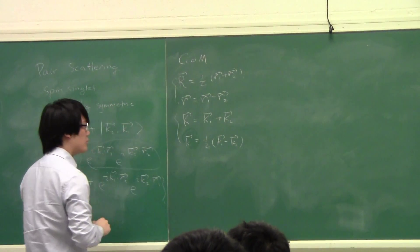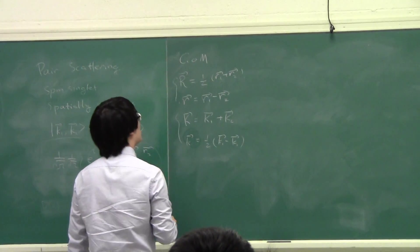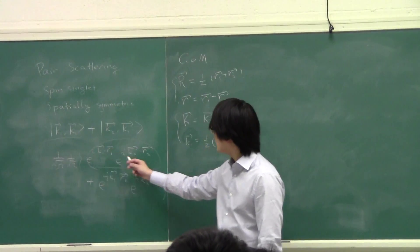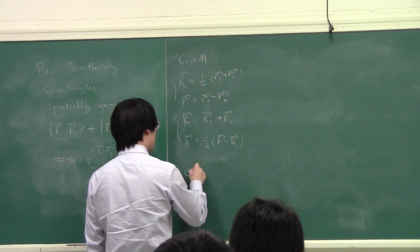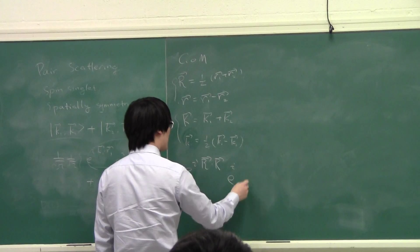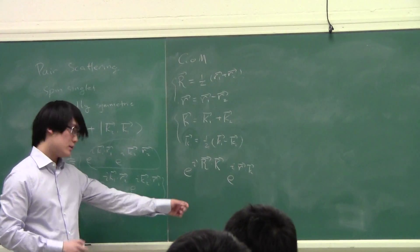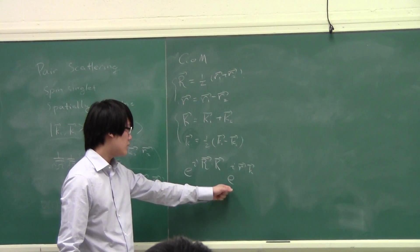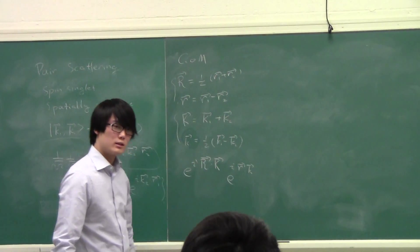The relative momentum, small k, is equal to one half of (K1 − K2). This one half comes from the reduced mass being half a mass. You find that the exponent turns into e^{iR·K} e^{ir·k}, which is what we expect: the center of mass moving with big K, and the reduced mass moving with small k.